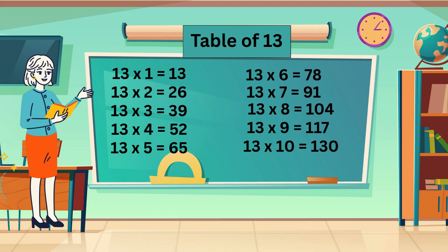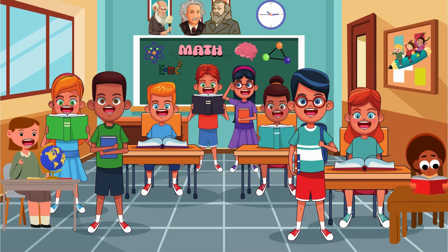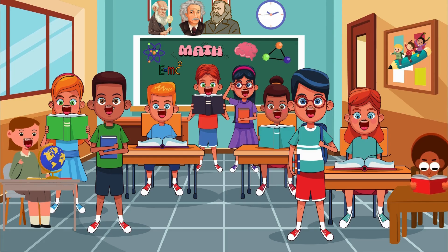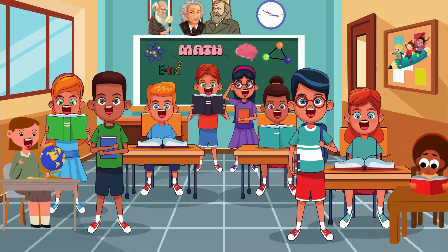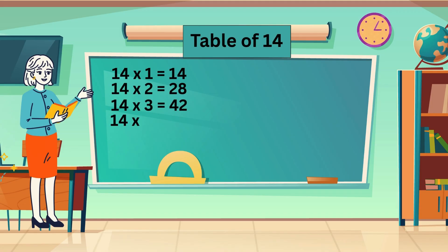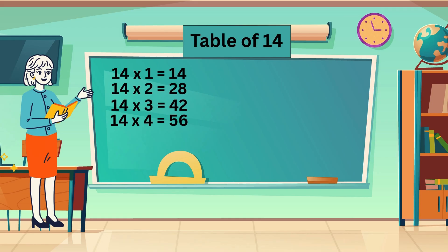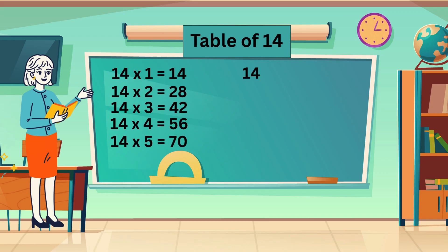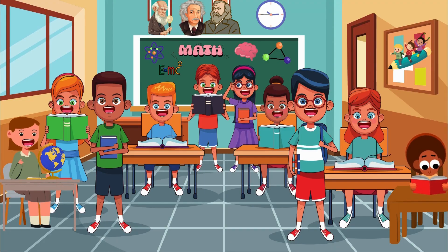Table of 14. 14 ones are 14. 14 twos are 28. 14 threes are 42. 14 fours are 56. 14 fives are 70. 14 sixes are 84. 14 sevens are 98.